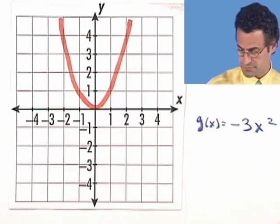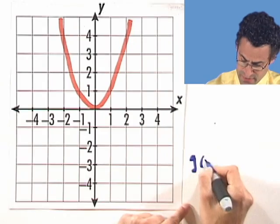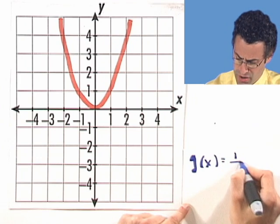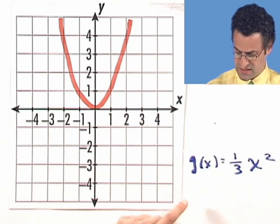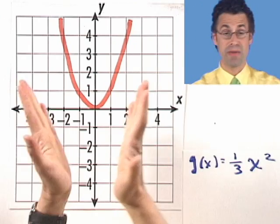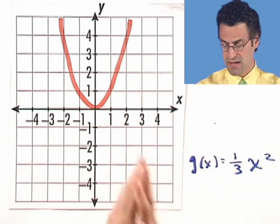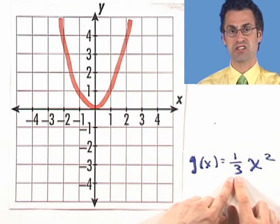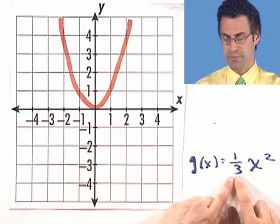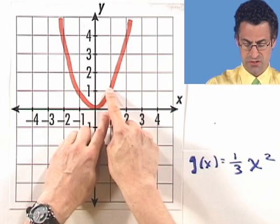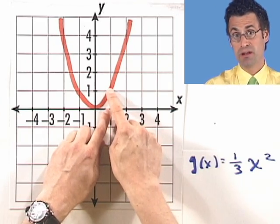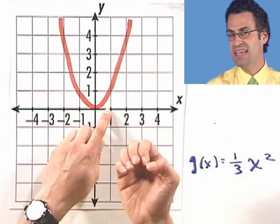Let's try another one together. How about g of x equals 1 third times x squared. We see that the coefficient is positive, which means this will remain a happy face. But now I'm multiplying by a number that's actually less than 1. Before, when x equals 1 in a regular parabola, I get 1. Now when I plug in, I merely get 1 third.